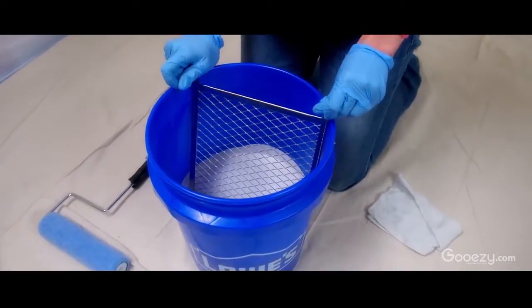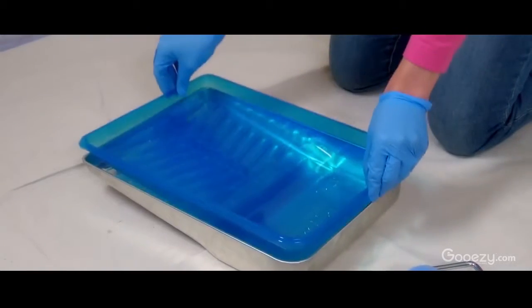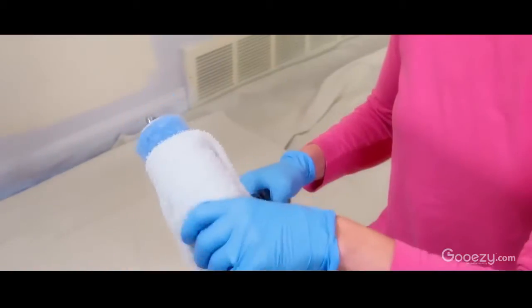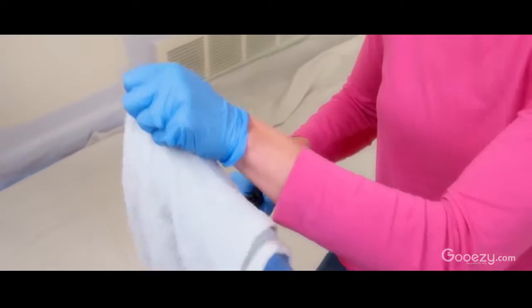If you're using a bucket, you'll need a roller grid. For pans, use a liner for easy cleanup. To help the paint load, first dampen the roller cover with a wet rag.